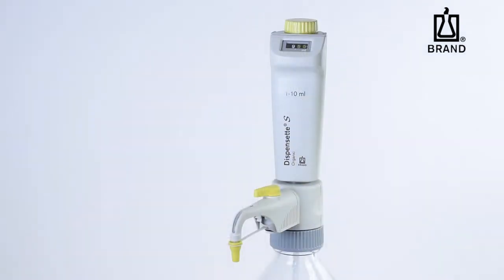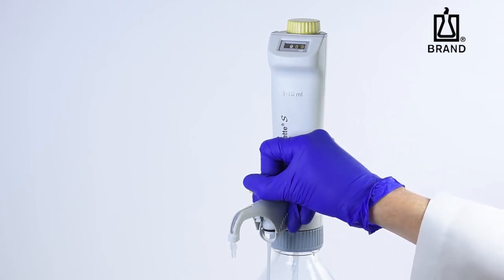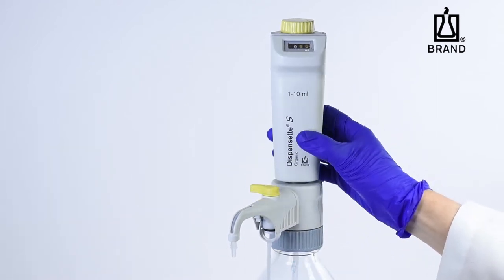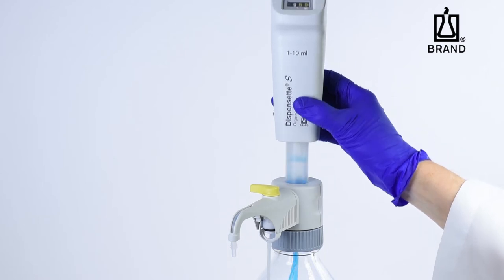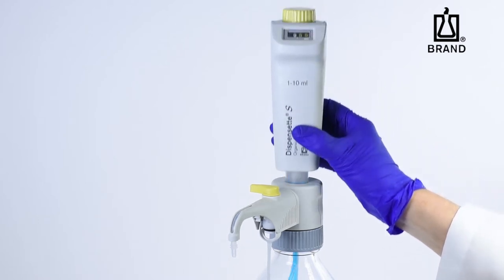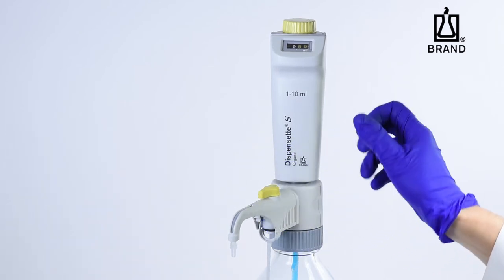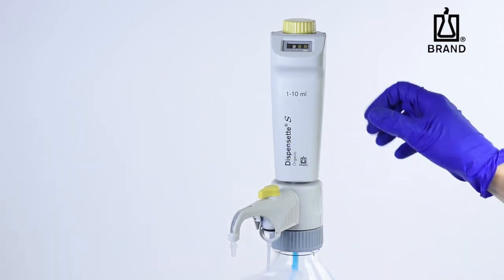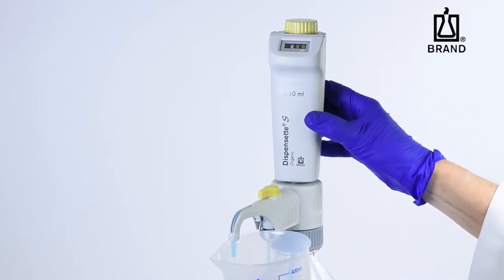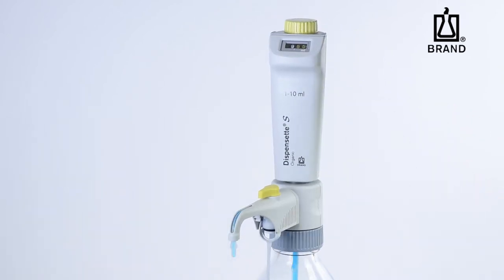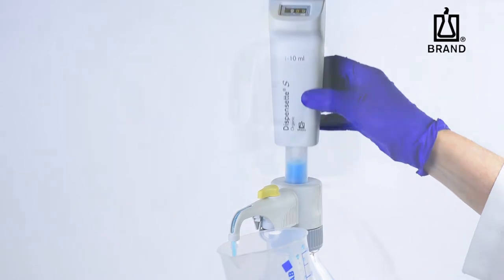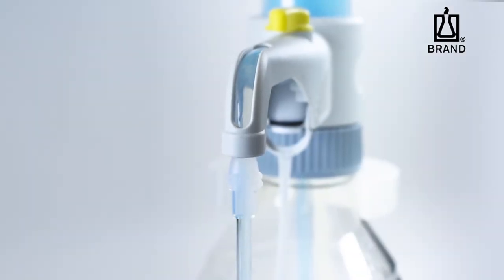To prime your Dispenset S, unscrew the screw cap of the dispensing tube and rotate the recirculation valve to the recirculate position. Gently pull up on the piston and push down to the lower stop. Repeat this process at least five times. Rotate the recirculation valve to dispense. To avoid splashing, hold the discharge tube against the inner wall of a suitable waste vessel and dispense. Discard the first dispensing. Make sure no bubbles appear in the viewing window on the discharge tube.